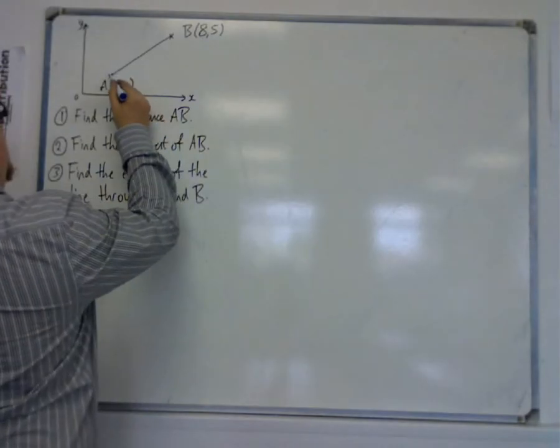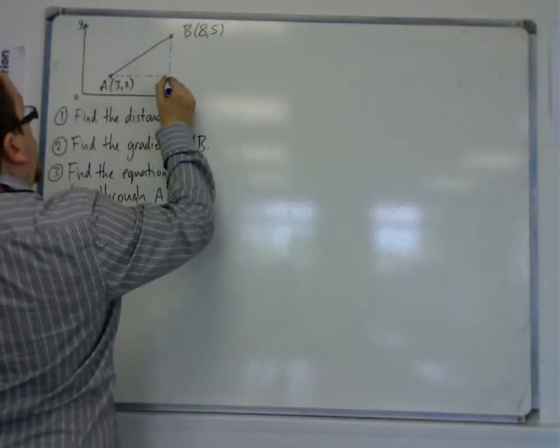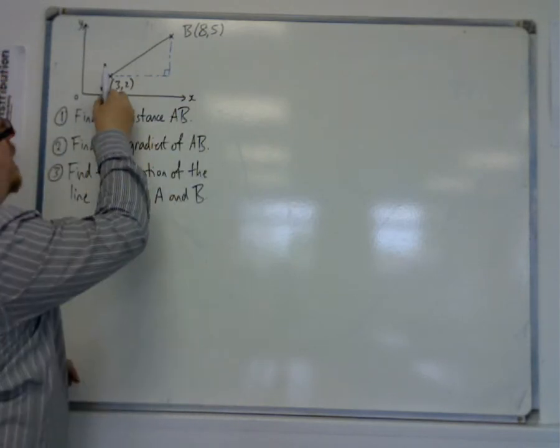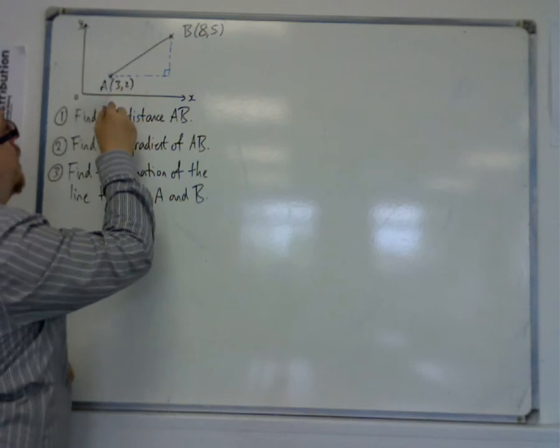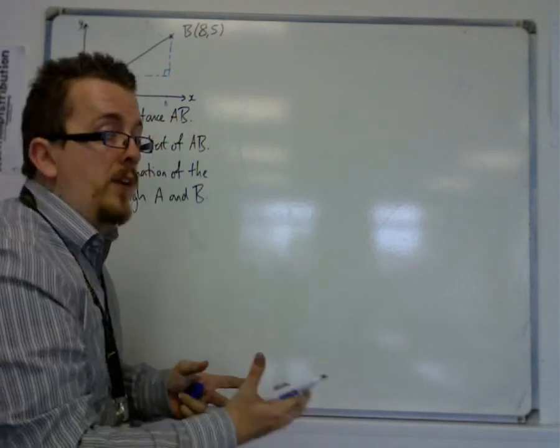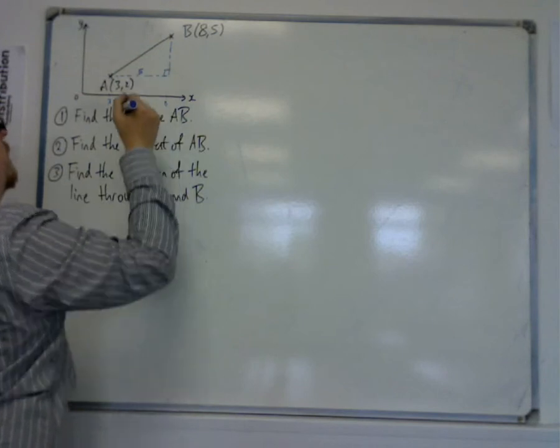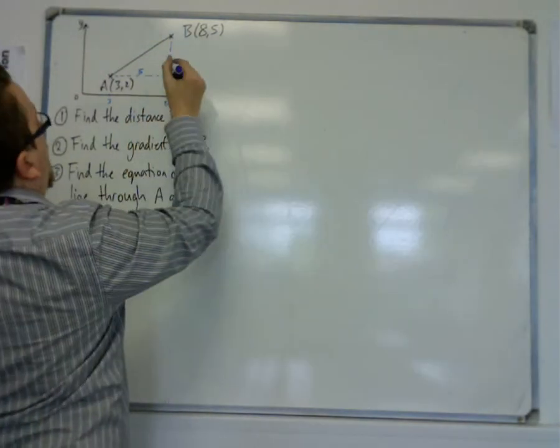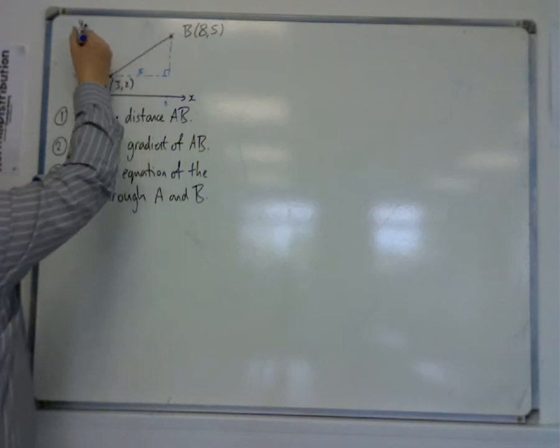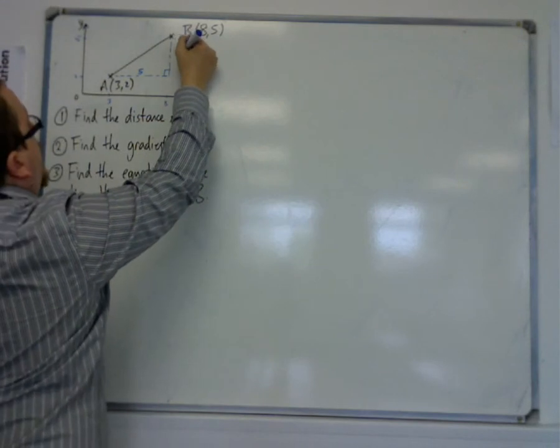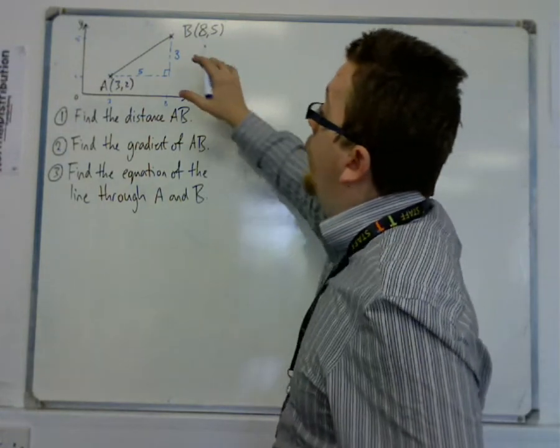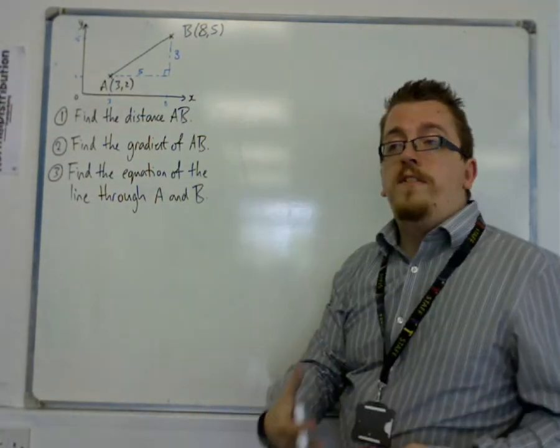Because what we can do is we can turn this into a right-angled triangle. If we look at, and we think about that that is 3, and that is 8, then the distance, the base of this triangle has length 5. The height of this triangle is going from 2, from that given by that coordinate, up to 5. So the height of the triangle is 3. So you can work out the distance from A to B by trying to find the length of that line.